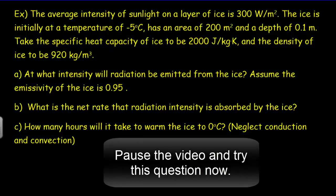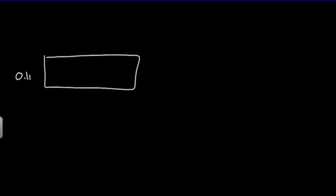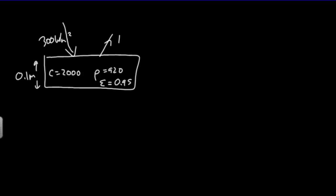Here's a question involving the increase in temperature of a surface. We're given ice with a depth of 0.1 meters, specific heat capacity of 2000 J/(kg·K), density of 920 kg/m³, and emissivity of 0.95. The intensity of radiation coming in is 300 watts per meter squared. Part A asks for the output intensity — this is an imperfect black body radiator, so we use the Stefan-Boltzmann law: I_out = emissivity × σ × T⁴.